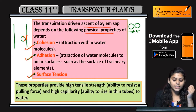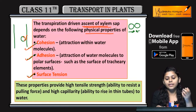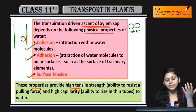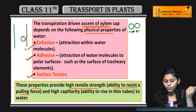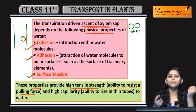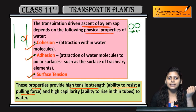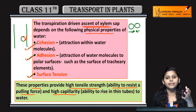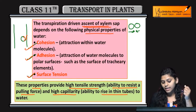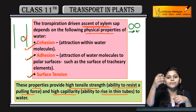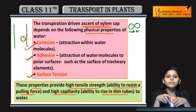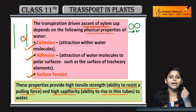ये तीन properties responsible हैं Ascent of Sap के लिए. ये properties provide करती हैं High Tensile Strength — that means ability to resist a pulling force. कोई भी pulling force है उसे resist करती है, and provide करती है High Capillarity. High Capillarity means rise in thin tube की ability, ताकि वो thin tubes में xylem के tracery elements में आसानी से rise कर सके.